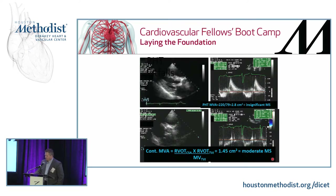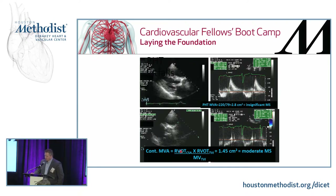Using pressure halftime here's another example: a pressure halftime of 79, so 220 divided by 79 gives 2.8 centimeters squared — insignificant mitral stenosis. But being good doctors, we don't stop there, because maybe the patient has symptoms consistent with mitral stenosis. We can use the continuity equation through the mitral valve: the cross-sectional area of the RVOT times the TVI through the RVOT, divided by the mitral inflow TVI, gives us 1.45 cm² — moderate mitral stenosis. So in the same patient with the same tracings, one method says no mitral stenosis and the other says moderate.